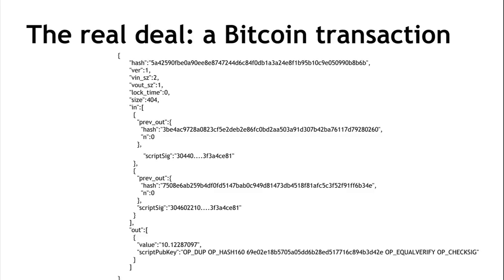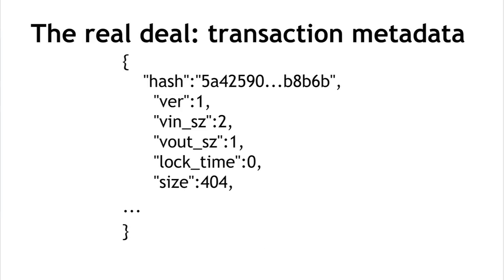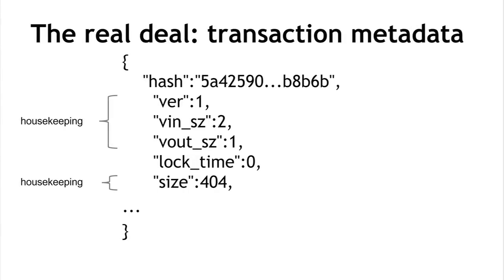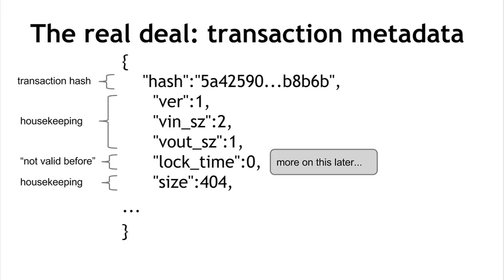That's really all there is conceptually to a Bitcoin transaction. Looking at it at the low level: this isn't exactly what a Bitcoin transaction looks like — it's a pretty-printed representation similar to JSON. In reality there's a compact binary format, but this is very close to the actual low-level transaction. There are three parts: metadata, a series of inputs, and a series of outputs. The metadata includes the size, number of inputs, number of outputs, the hash of the entire transaction serving as a unique ID for hash pointers, and a lock time parameter.